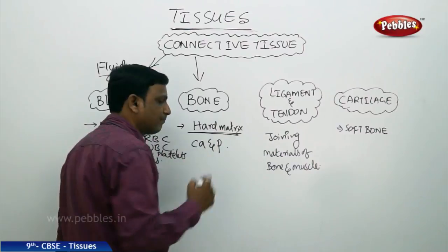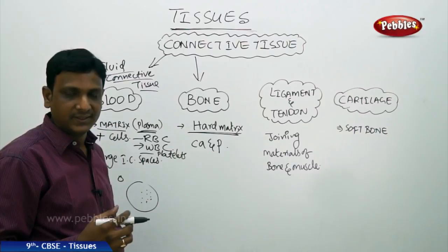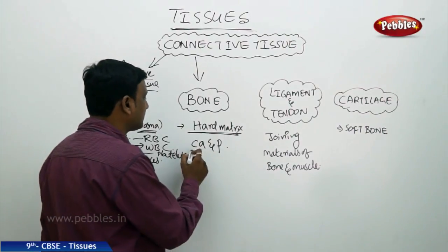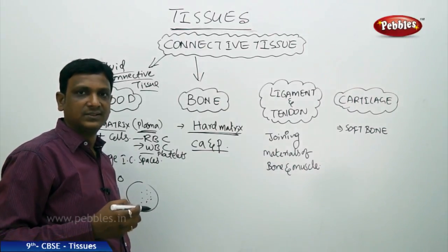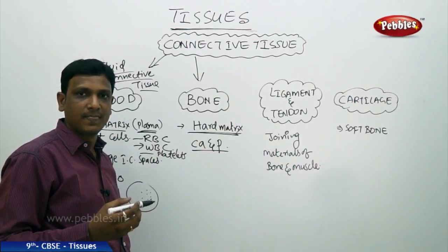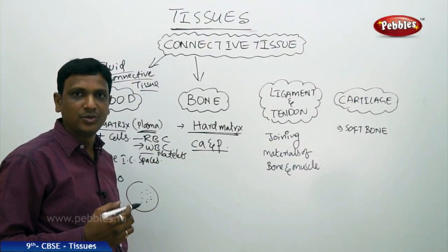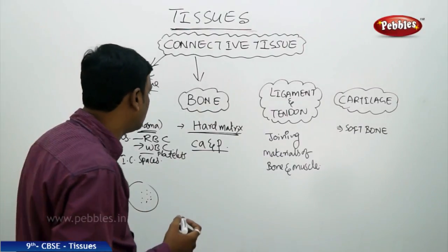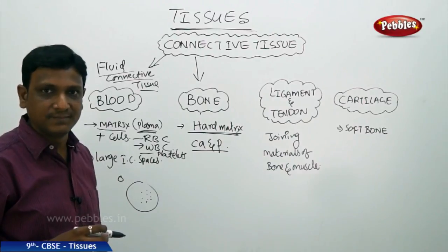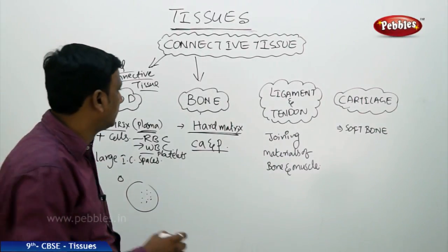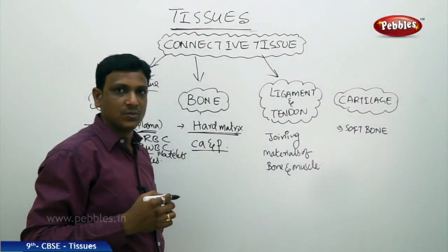Bones are made up of a hard matrix that is very compact and tightly packed. It is packed with minerals — salts of calcium and phosphorus. Calcium and phosphorus compounds make up the bone. You need calcium and phosphorus in your diet to keep your bones strong and healthy. Bone is a connective tissue that gives mechanical strength, shape, and structure to our body.